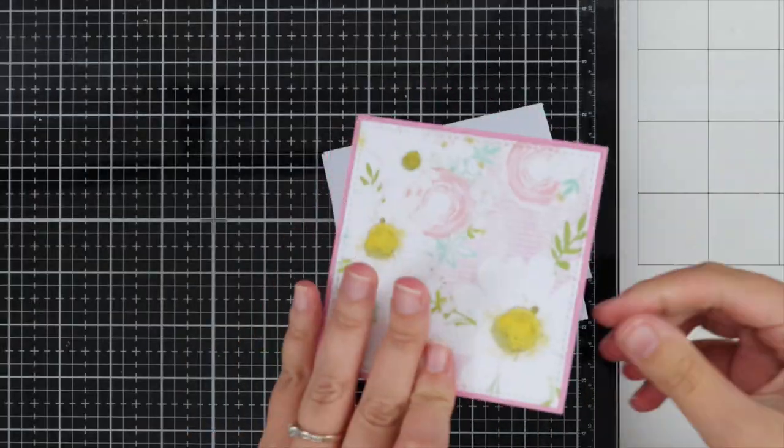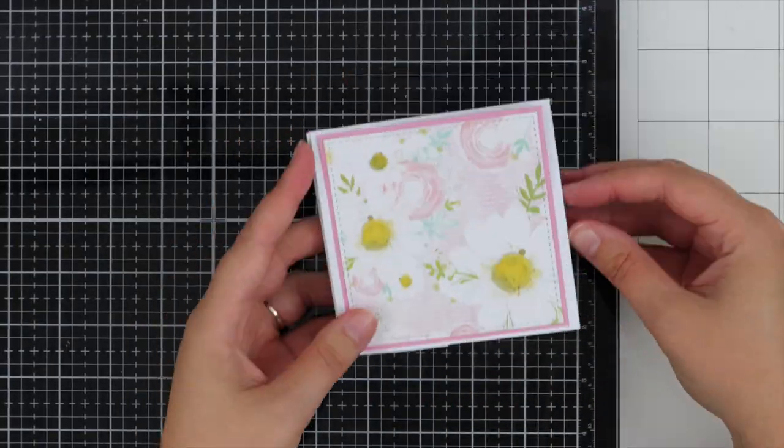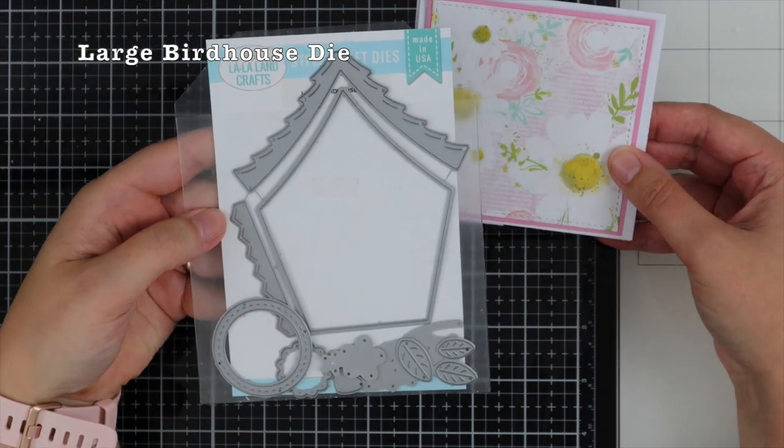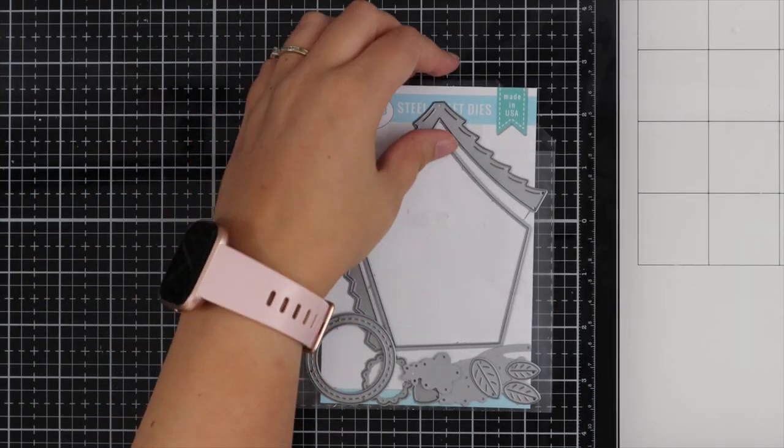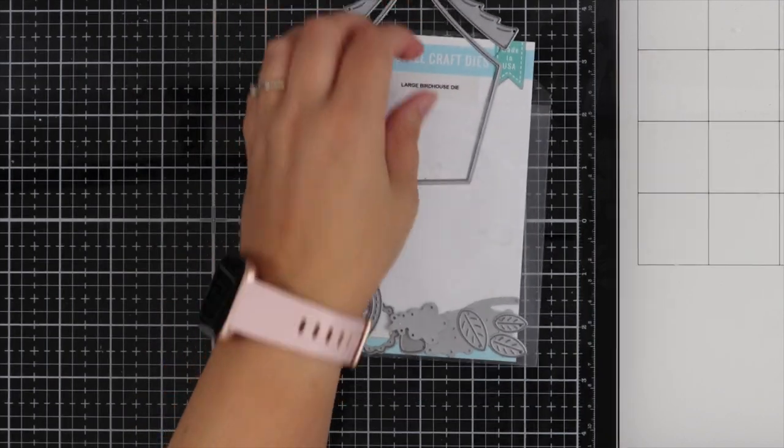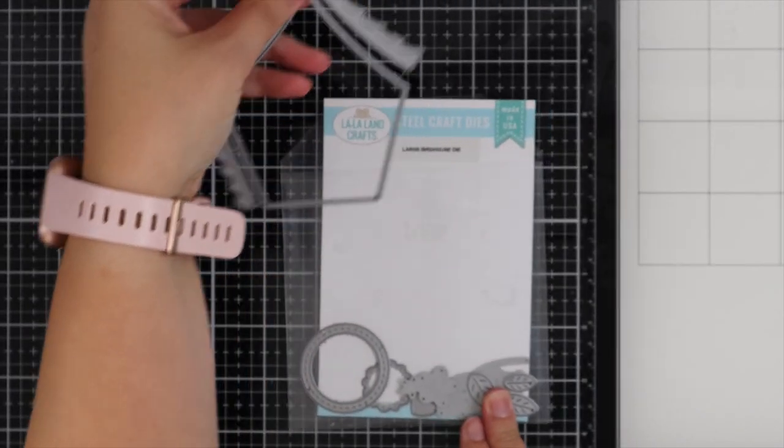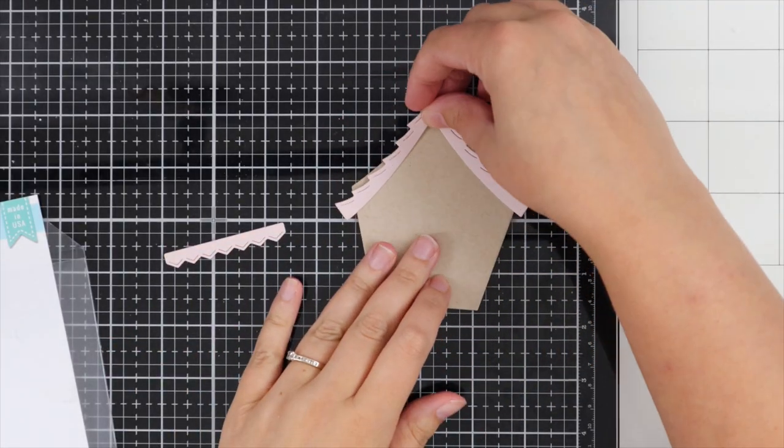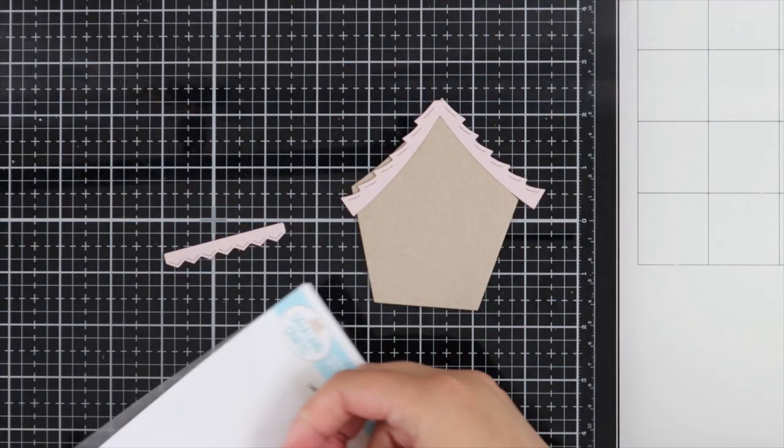Using my liquid adhesive again, I'm popping this onto the front of the card. That's the card base complete, and now I'm using the large birdhouse die, one of my favorite dies. It's so cute.